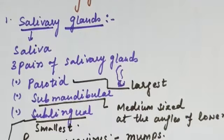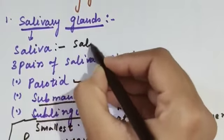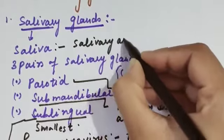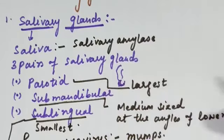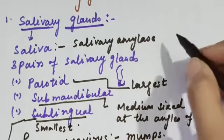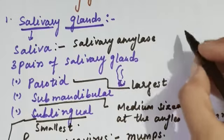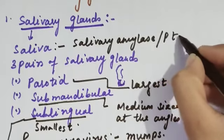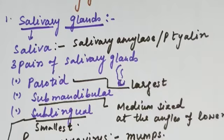The only enzyme present in saliva is salivary amylase. It digests carbohydrates — starch and glycogen. The second name of this enzyme is ptyalin, where the 'P' is silent.